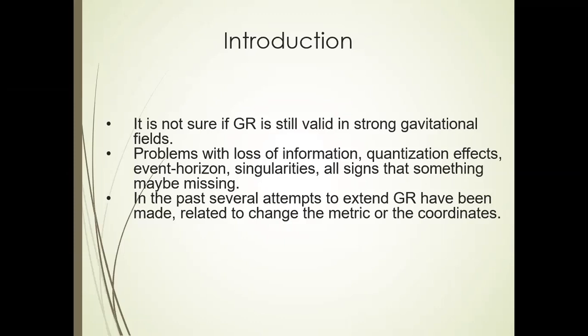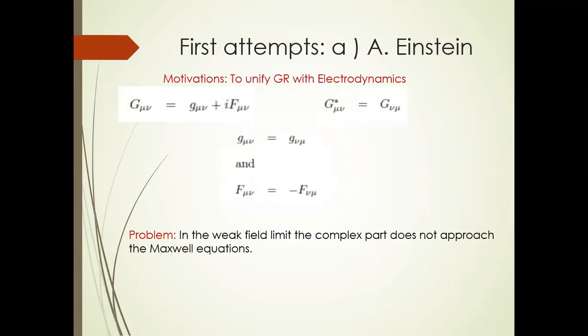In the past, shortly after the construction of general relativity, several attempts have been made to extend general relativity or the related change of matrix and coordinates. For example, one of the first attempts, not the first one, was done by, was published by Albert Einstein. He wanted to unify general relativity with electrodynamics, one of his dreams. So he proposed a matrix, which has two real parts, G mu nu and F mu nu. And one is in the real part and the other is in the imaginary part. Imposing the symmetry condition G star mu nu as G mu nu, one can prove easily that the G mu nu is symmetric, as it is in general relativity in most cases. And that F mu nu is anti-symmetric, so it has this property of the electromagnetic field tensor in electrodynamics.